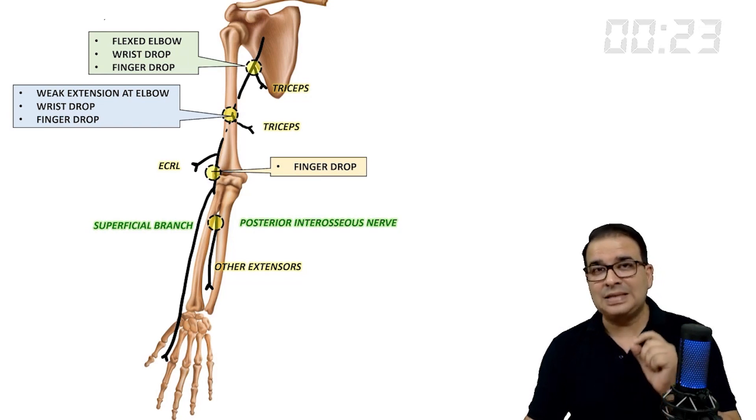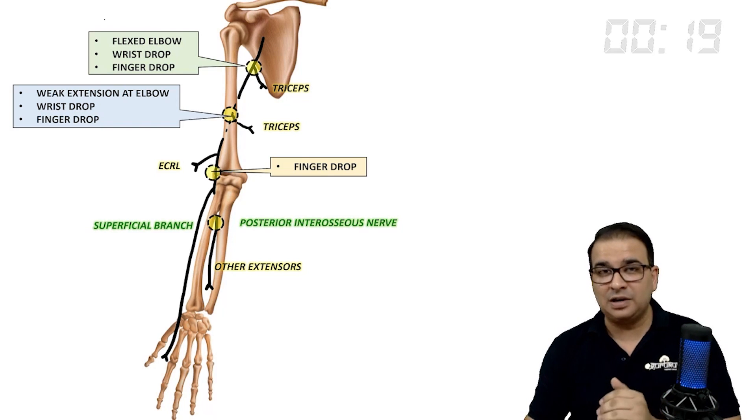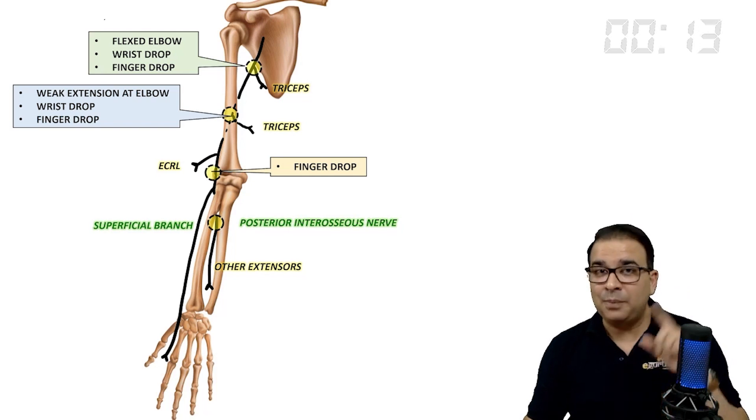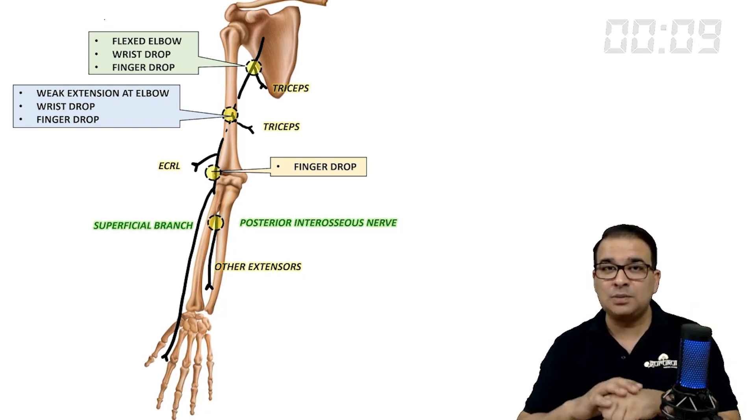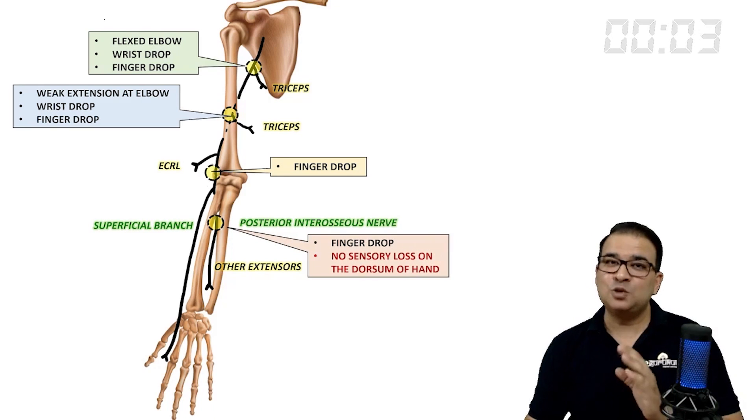But if there is an injury to the posterior interosseous nerve branch of the radial nerve, in that case, again, the finger drop will be seen. But this time, the difference is that in the upper three cases, there will be a sensory loss in the dorsum of hand. But when the injury is to posterior interosseous nerve, there will be no sensory loss as superficial branch will be spared in this case.